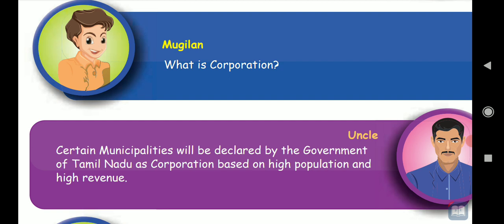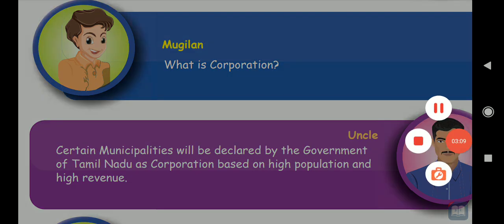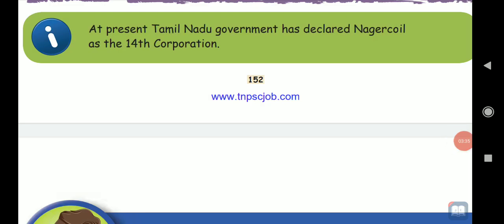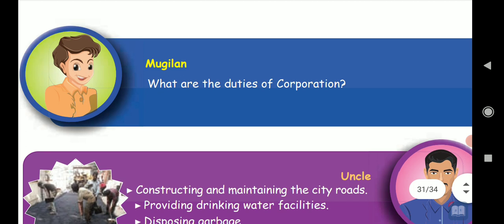Then we will start our today's topic. See the structure of the local bodies — the urban local bodies only we have learned now. We have learned corporation and municipality. The remaining is town panchayat, and today we are going to learn about the town panchayat. Our Tamil Nadu government has declared Nagarkoyal as the 14th corporation. Next, we will start the dialogue.